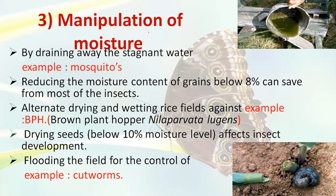The next practice is manipulation of moisture. Stagnant water collected in containers and packets filled with rainwater must be drained, because these conditions increase chances of pest multiplication. Draining away stagnant water prevents the mosquito population during rainy season. Since mosquitoes are vectors that transmit diseases in humans, this practice is very helpful in preventing further infestation.